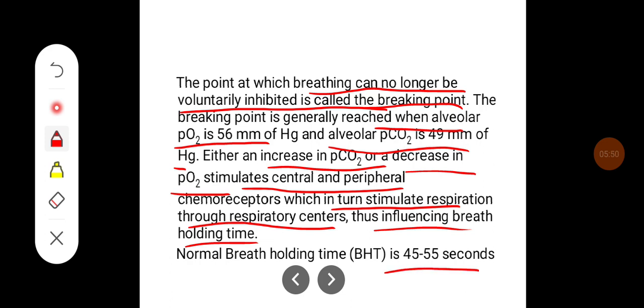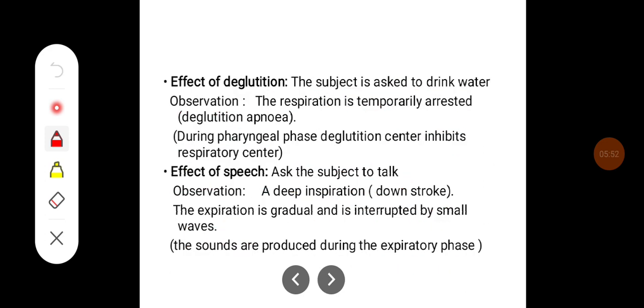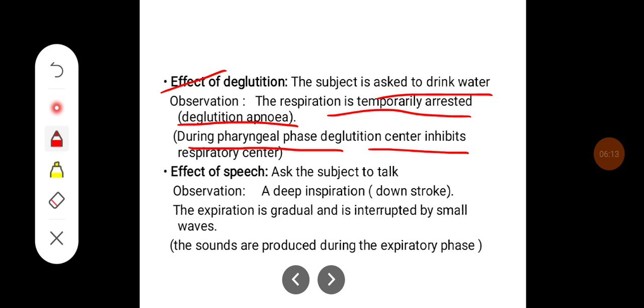The effect of deglutition: when the subject is asked to drink water, what you observe is that respiration is temporarily arrested during deglutition apnea. During the pharyngeal phase of deglutition, the deglutition center inhibits the respiratory center.